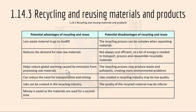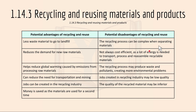1.14.3 covers recycling and reusing materials and products, with advantages and disadvantages. Advantages include less waste material, helping to reduce global warming caused by emissions from processing raw materials like carbon dioxide, reducing the need for transportation and mining, creating jobs in the recycling industry, and saving money as materials are used for a second time. Disadvantages include the recycling process being complex when separating materials.